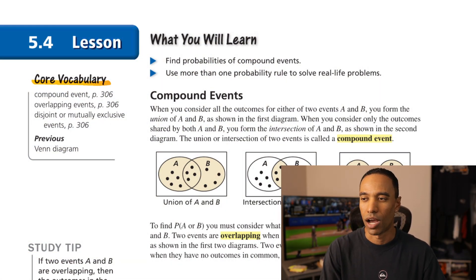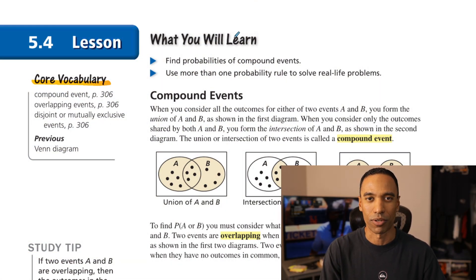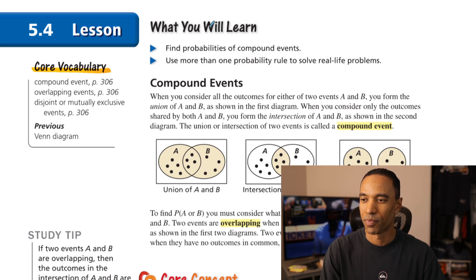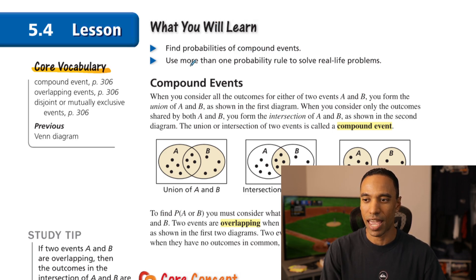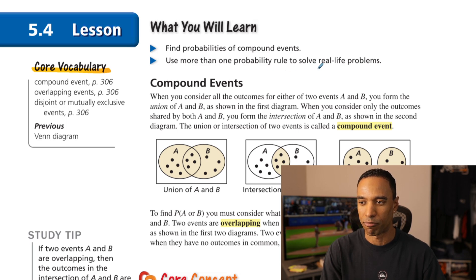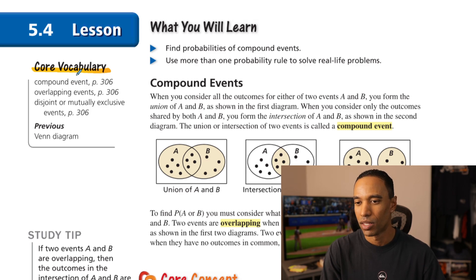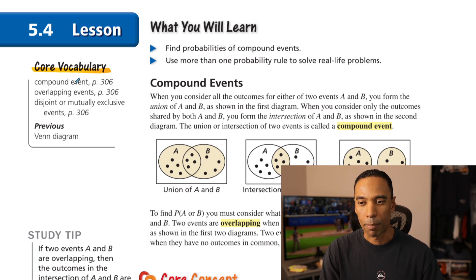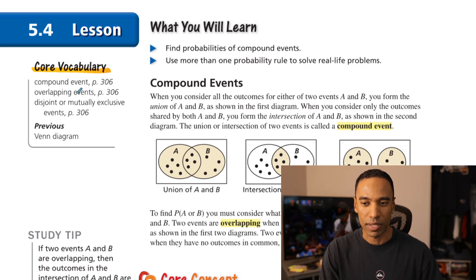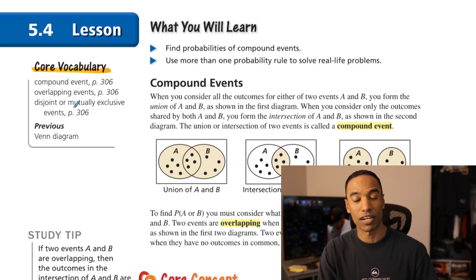Grab a calculator, by the way — all the statistics stuff really needs calculators. We're going to learn how to find probabilities of compound events and use more than one probability rule to solve real life problems. Compound events is going to be a new phrase, along with overlapping events and disjoint or mutually exclusive events.